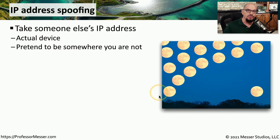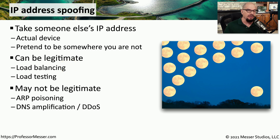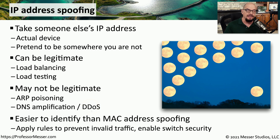Anytime you see a device using the IP address of a third-party device, that is IP address spoofing — a device trying to pretend to be something it's not. These situations could be legitimate; for example, load balancers use spoofed IP addresses to represent a single IP while different addresses provide the service. But attackers may use IP spoofing for ARP poisoning, DNS amplification, or distributed denial of service attacks. You can often configure firewall rules or access control lists to detect IP address spoofing and block that traffic from entering or leaving your network.